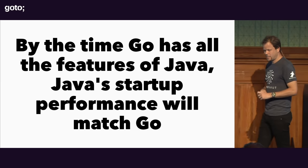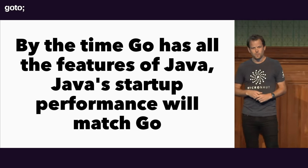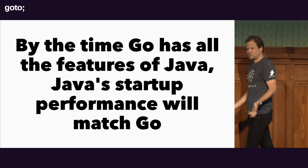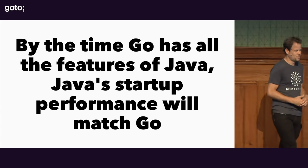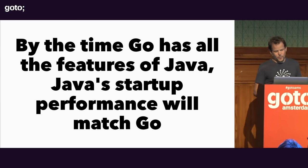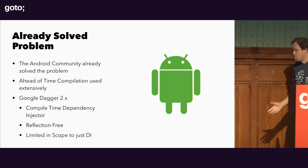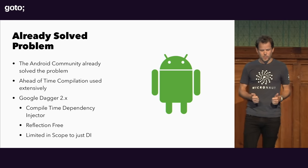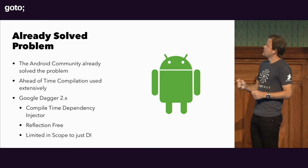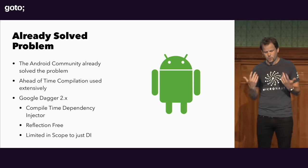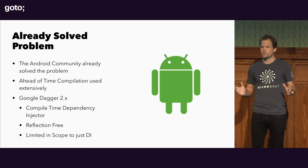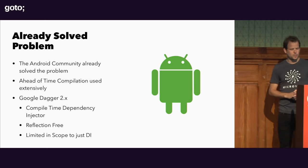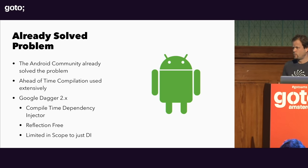By the time a language like Go has all the features of Java, Java's startup time will match Go's. This is an already-solved problem. The Android community already solved this using what's called ahead-of-time compilation. There's something called Google Dagger, which is a compile-time dependency injector — completely reflection-free, limited in scope to DI to keep it Android compatible. It uses ahead-of-time compilation to avoid reflection and keep memory low and performance fast.